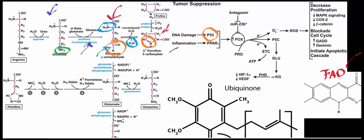That's enough for this video. We've seen that proline and arginine get degraded to glutamate gamma-semialdehyde. In the next video, we're going to look at the fate of glutamate gamma-semialdehyde.